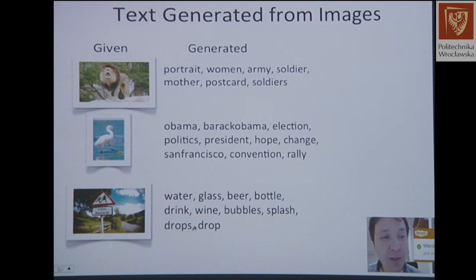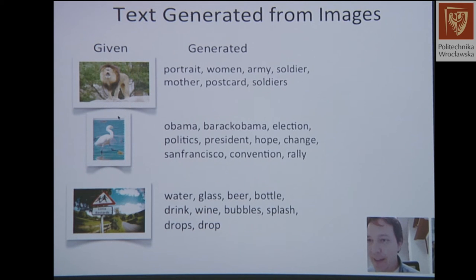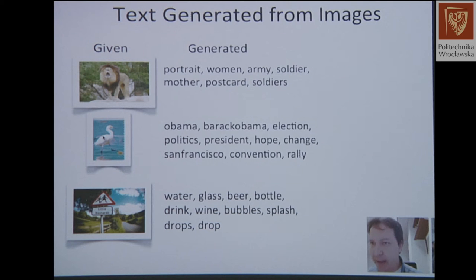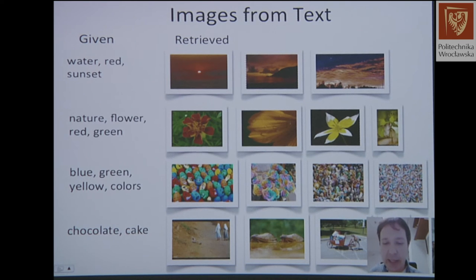Here are examples where it fails. For one image, it generates 'portrait women army soldiers' — completely confused. For another image, it generates 'Barack Obama election politics.' Looking at this Flickr dataset, there aren't many images of animals but there are a lot of Obama images, so the model says this is a weird-looking image and maps it to Obama. You can also go from text to images: given tags 'nature, flower, blue, green' it does reasonably well; given 'chocolate cake,' it retrieves bugs that kind of look like chocolate cakes.